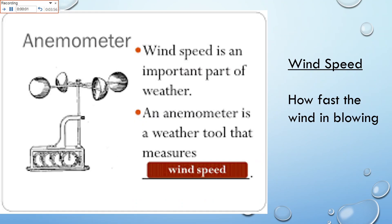Here is an anemometer. An anemometer measures wind speed — how fast the wind is blowing. The wind is caught in little cups, it causes it to spin, and then the little dials will count it up and tell you how fast the wind is blowing.